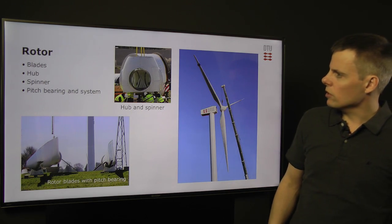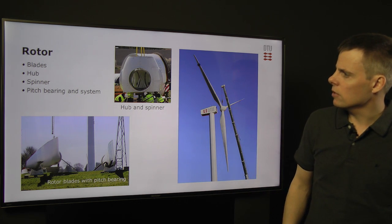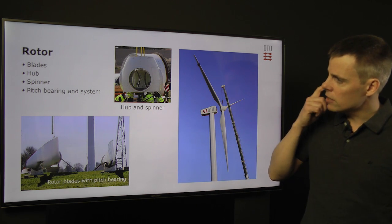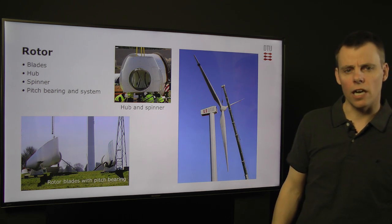If we look at the rotor, it consists of the blades, the hub, the spinner, the pitch bearing, and also the pitch system, which is inside the hub.